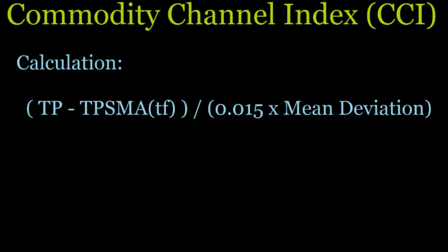The calculation of the Commodity Channel Index or CCI starts with TP, which equals the typical price. Typical price is the high plus the low plus the close, divided by 3 — kind of like an average of those three numbers. Then you subtract a simple moving average of that typical price; the timeframe for that SMA is at your discretion. That top portion of the fraction is then divided by 0.015 multiplied by the mean deviation. You can play with the 0.015 constant as well as the timeframe.